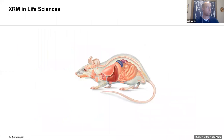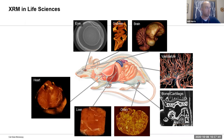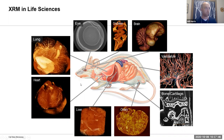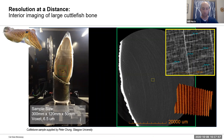Shifting gears into the world of life sciences or biology — a lot of the origins of x-ray CT imaging actually come from the clinical world, looking either at humans or animals for their structures. We've covered a pretty broad range of things within life sciences, with some examples spanning the world of material science and life science — what we call biomaterials.